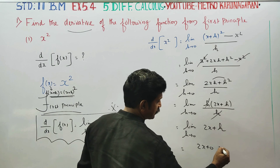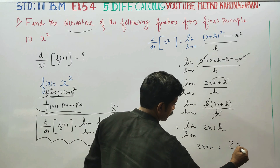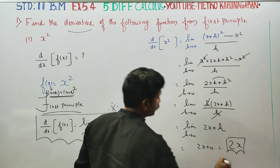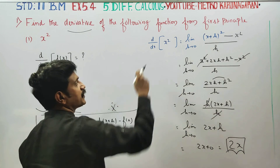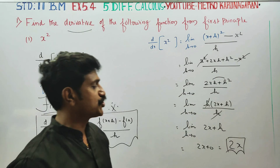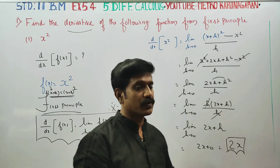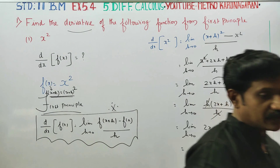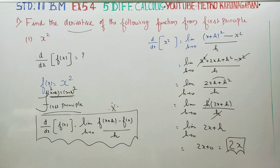Your answer is 2x. This is the end result — x squared differentiated gives 2x. The first principle method has been used. Thank you.